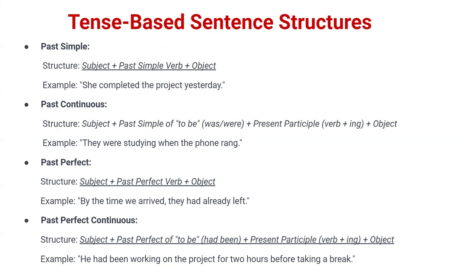First is past simple. The structure of past simple is: subject + past simple verb + object. The past simple verb is nothing but the second form of a verb. In past simple we use the second form of the verb. For example: 'She completed the project yesterday.' Here 'she' is the subject, 'completed' is the second form of 'complete,' 'project' is the object, and 'yesterday' is a time expression.